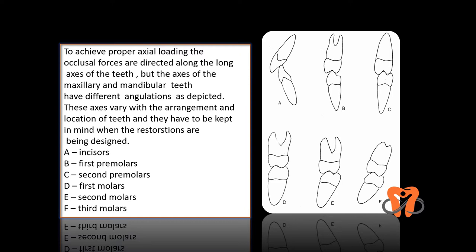To achieve proper axial loading, it is important that the occlusal forces are directed along the long axis of the teeth. However, the axes of maxillary and mandibular teeth have different angulations. These axes vary with the arrangement and location of the teeth, and they must be kept in mind when restorations are being designed. We should know the angulation of teeth depending upon their location, and keeping that angulation in mind, we make the restoration so that occlusal forces get directed along the long axis.